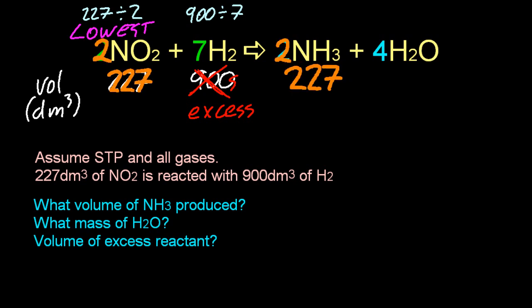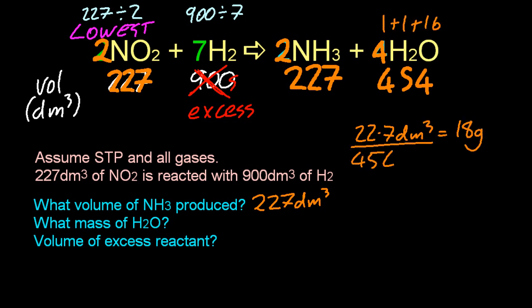So two is to 227 as two is to 227. That's the first answer. What's my mass of water? Four is to 454, and a little cross multiplication gives me 360 grams.